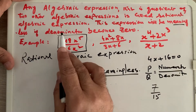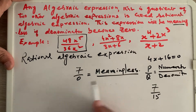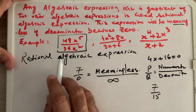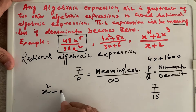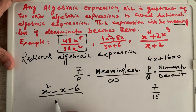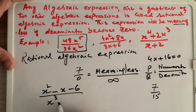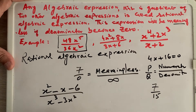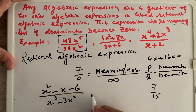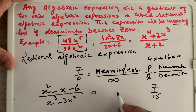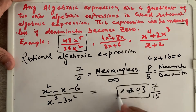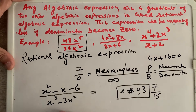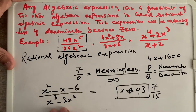If the denominator becomes zero, the expression is infinity or meaningless. So we write down the restrictions at the beginning. For example, if we have (x² − x − 6) over (x³ − 3x²) as a rational algebraic expression, we must put the condition that x should not equal zero or three, because if x is zero or three, the denominator becomes zero.